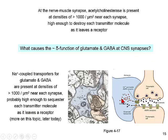At a CNS synapse, there are glutamate transporters on presynaptic cells and on glia, and similarly several families of GABA transporters on glia and presynaptic cells. Transporters on presynaptic cells help replenish the transmitter, which gets pumped back into vesicles. There is also very efficient elimination of transmitters on glia — it can't be reused, but it sharpens signal transmission in the central nervous system.